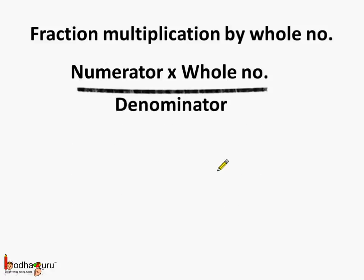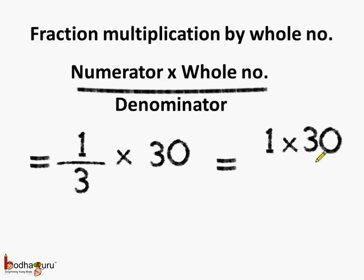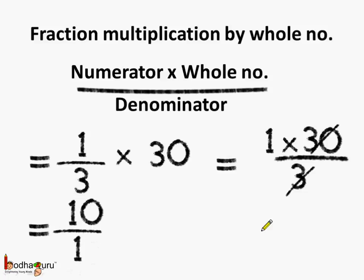Let's take another example. Fraction multiplication by a whole number means the numerator is multiplied by the whole number, divided by the denominator. So if we need to find 1 third of 30, we multiply 1/3 by 30. So 1/3 of 30 is equal to 1 multiplied by 30 divided by 3. Reducing it — 3 tens are 30 — so we get 1 into 10, and the answer is 10. So 1 third of 30 is equal to 10.